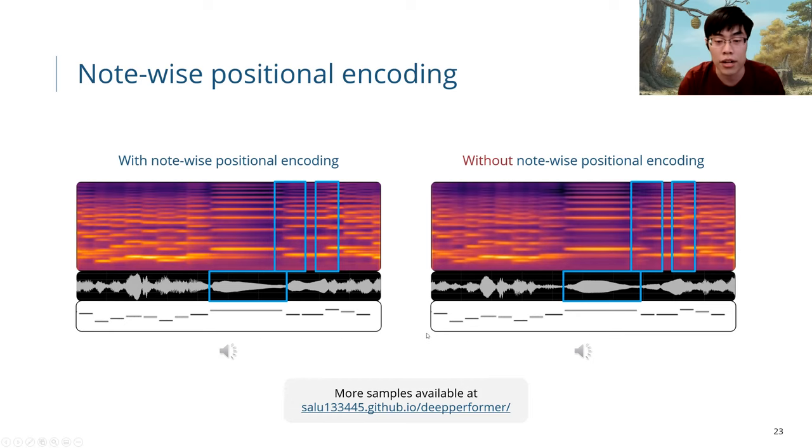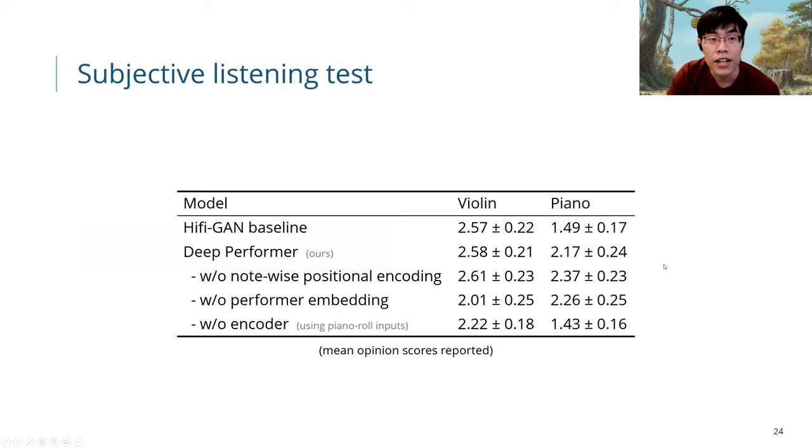Most samples are available on our demo website. Finally, we have a subjective listening task where we can see on the violin dataset, our proposed model achieves comparative performance to the HiFi-GAN baseline. And on the piano dataset, we are significantly outperforming the baseline.